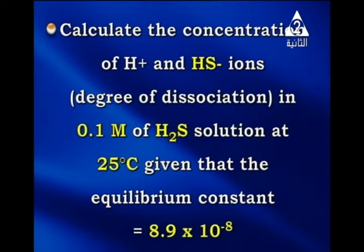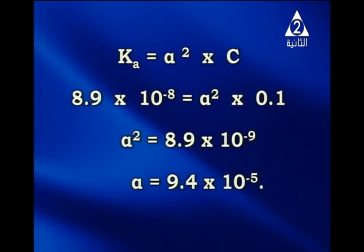Problem 3: Calculate the concentration of hydrogen ions and the degree of dissociation in a 0.1 molar H₂S solution at 25°C, given Ka = 8.9 × 10⁻⁸. Solution: By Ostwald's law, Ka = alpha² × c. So 8.9 × 10⁻⁸ = alpha² × 0.1, giving alpha² = 8.9 × 10⁻⁷. Therefore alpha = 9.4 × 10⁻⁴.